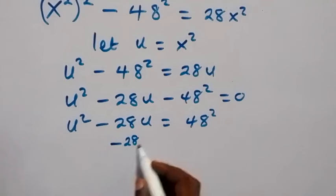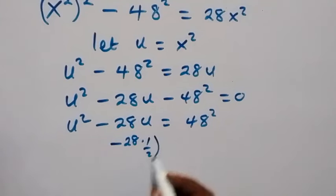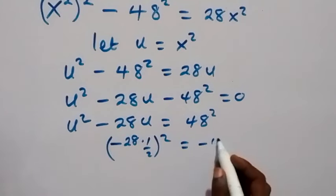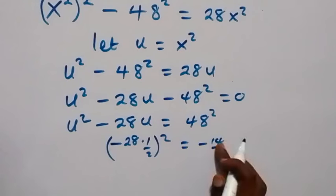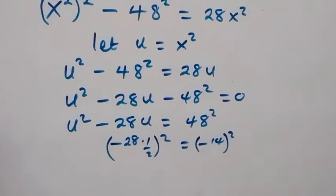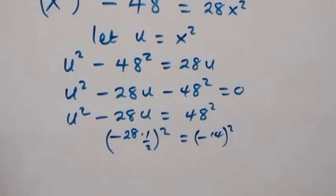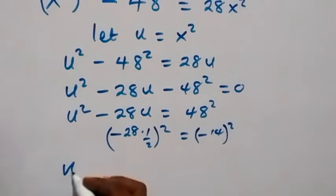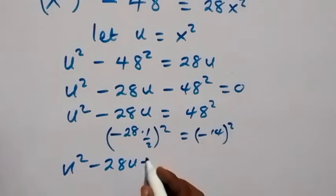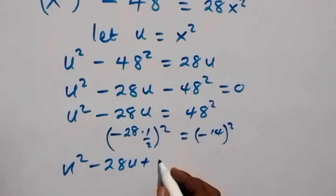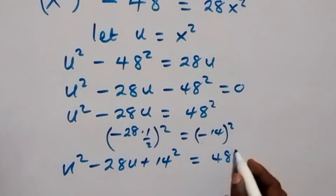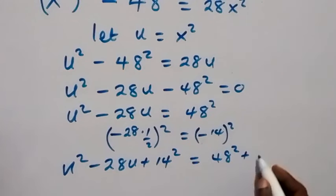For completing the square, we take half of the coefficient of u, which is minus 14, and then square it to get 14 squared. Adding 14 squared to both sides gives us u squared minus 28u plus 14 squared equals 48 squared plus 14 squared.